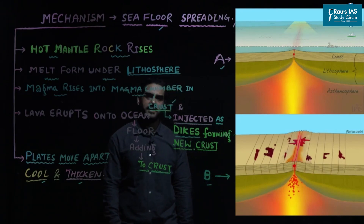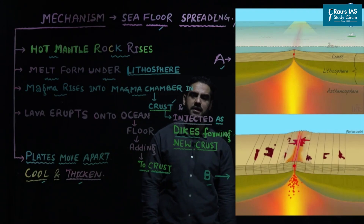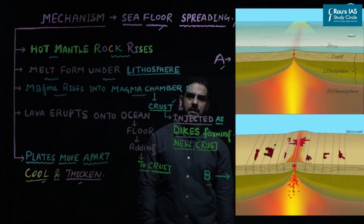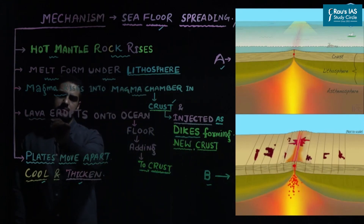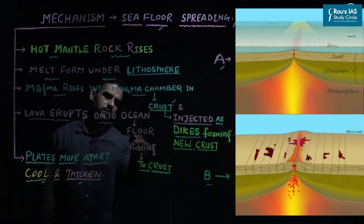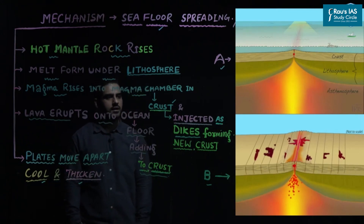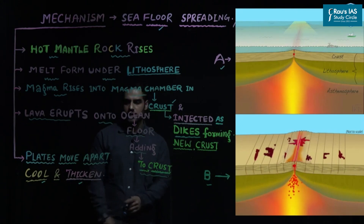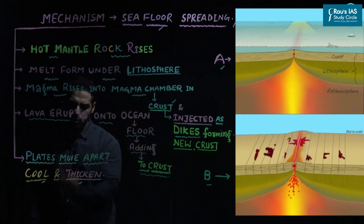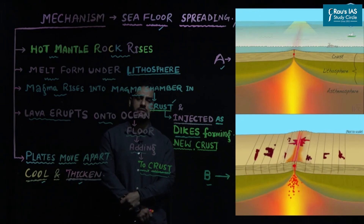Figure A reflects that as this magma reaches the lithosphere, it is creating a fault, making the plates break away. This lava erupts onto the ocean floor, adding to new crust. With time, the plates move apart — this movement of plates is called seafloor spreading. They later cool and thicken. This is the mechanism of seafloor spreading.